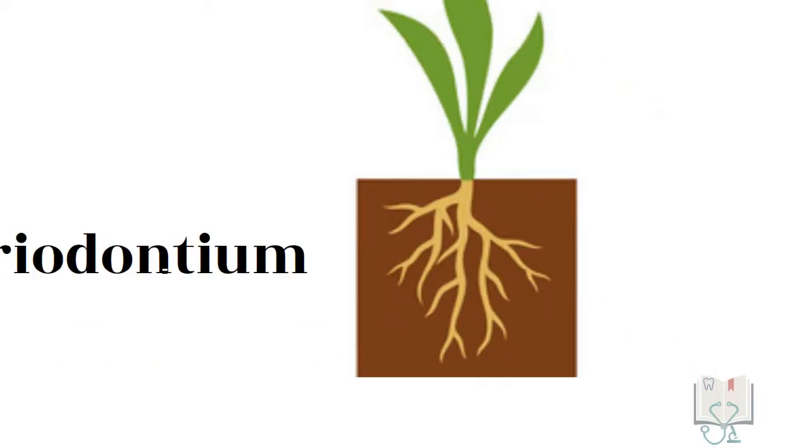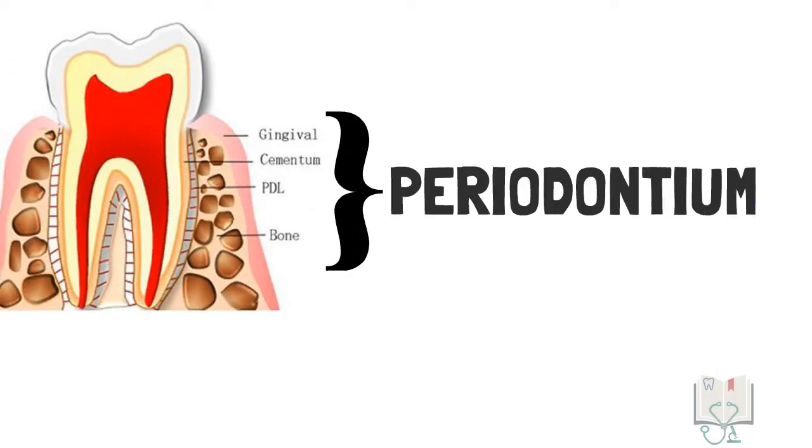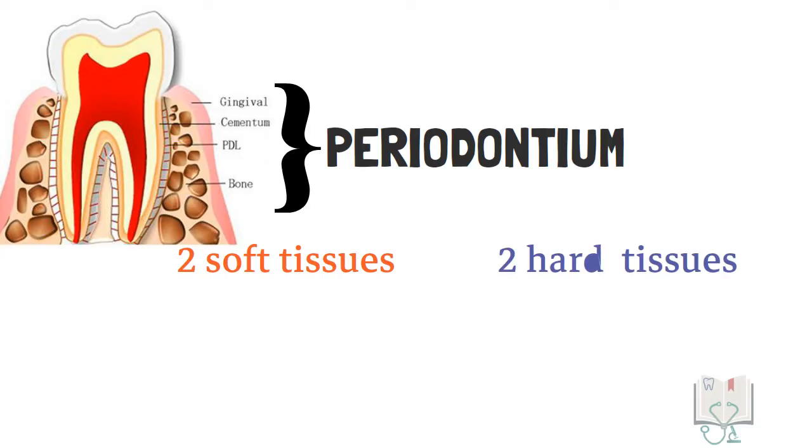Periodontium is the tissue that attaches and supports the tooth to the jaw. It is formed of four separate tissues, among which two are soft tissues, two are hard tissues.